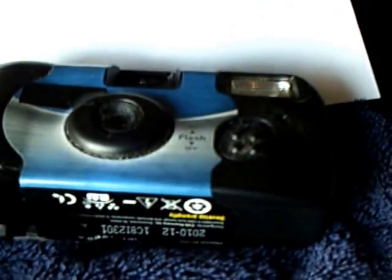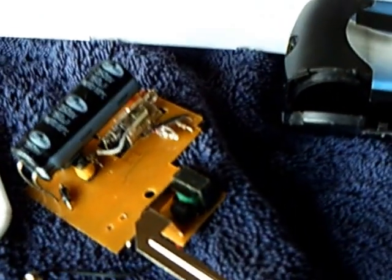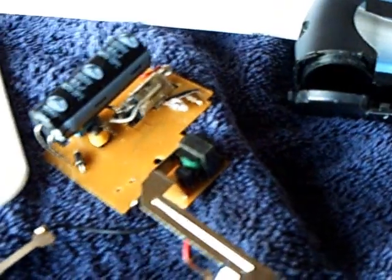You just get one of these cameras, take the circuit board out of it, rewire it for just the oscillator, take the flash part out, and you make this driver for the Cockroft-Walton voltage multiplier.